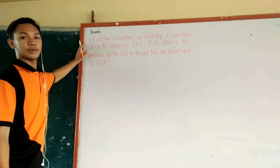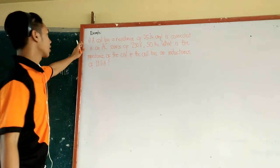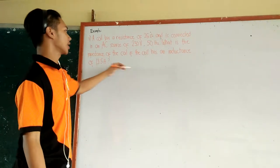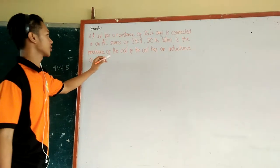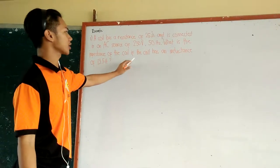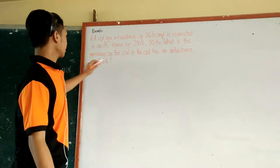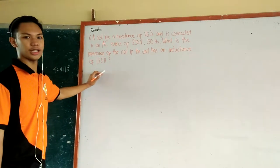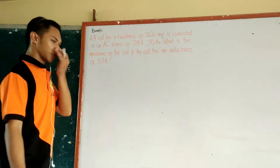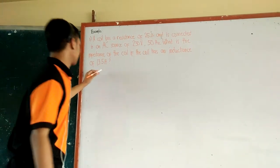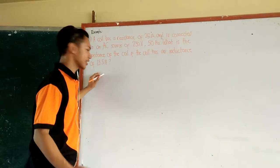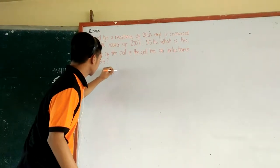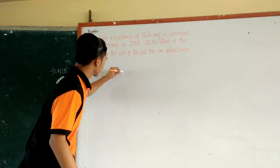Here we have Example 1. A coil has a resistance of 25 ohms and is connected to an AC source of 230 volts at 50 hertz. What is the impedance of the coil if the coil has an inductance of 13.5 Henry? We know that the formula for impedance is Z equals R plus jωL.